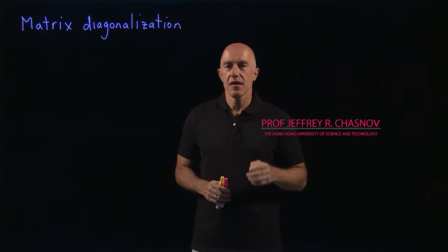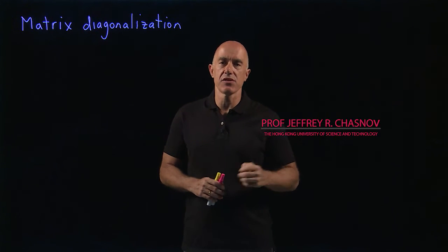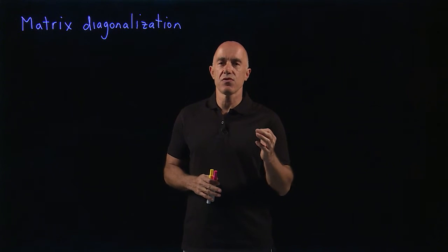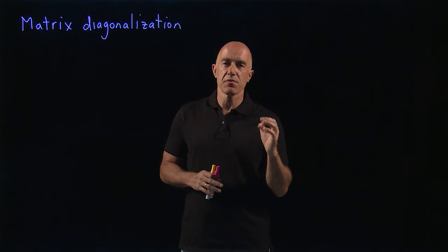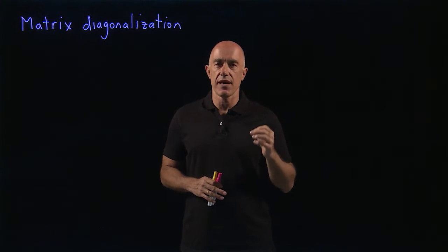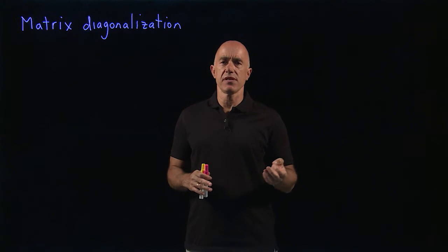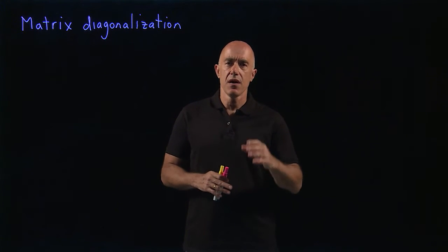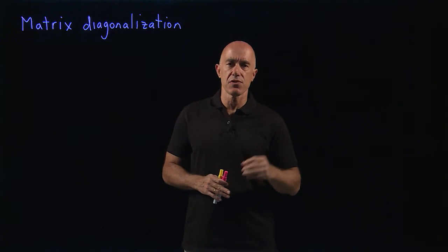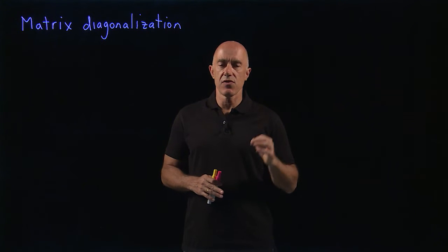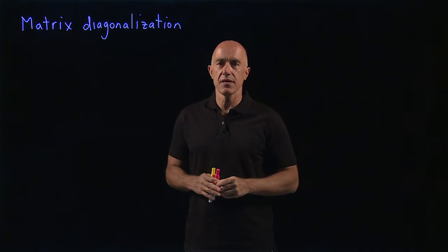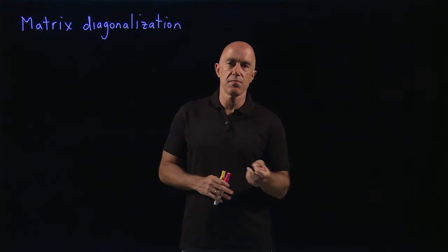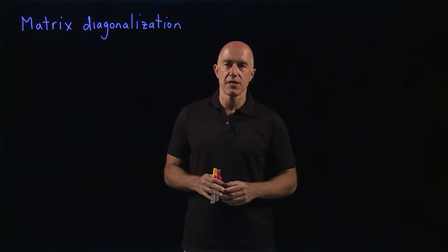If a matrix A, n by n, has n linearly independent eigenvectors — like the nice matrices that are symmetric — then we can do a very nice matrix multiplication on A to transform it into a diagonal matrix. Diagonal matrices are very easy to compute with. Usually they mean that when you have a system of equations, the equations decouple and you can solve each one individually. This is a very important topic in matrix algebra. Let me explain it first for the simple case of a 2 by 2 matrix, and then generalize it to an n by n matrix.